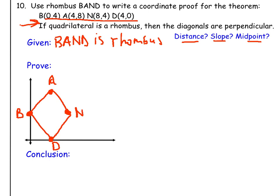So the diagonals of this rhombus, if we look at our picture, the diagonals are AD and BN. So what we're trying to prove is that BN is perpendicular to AD.